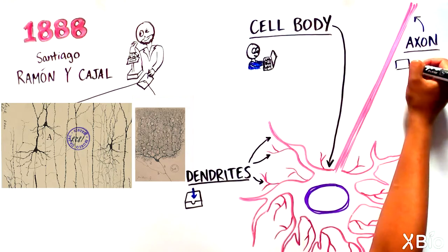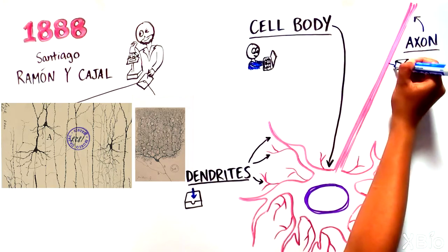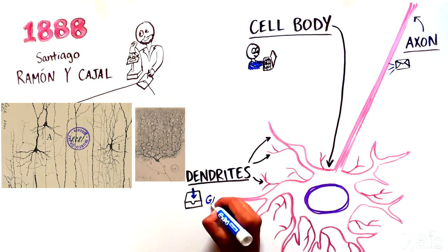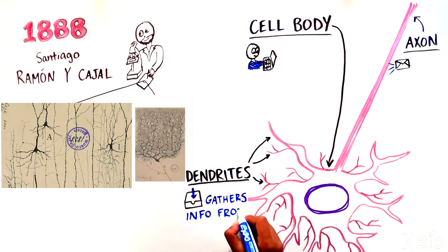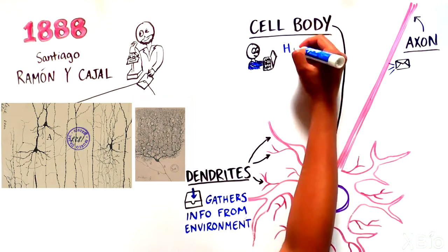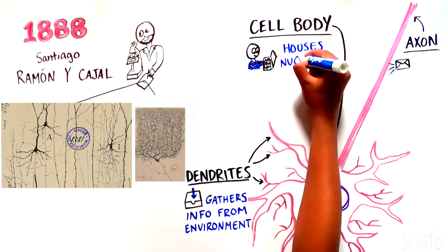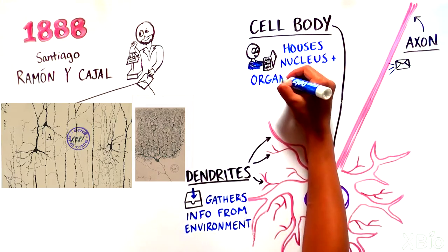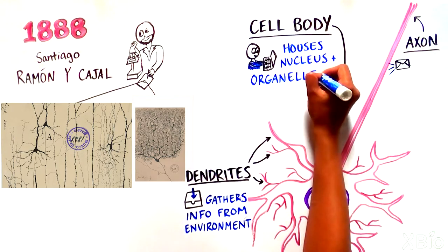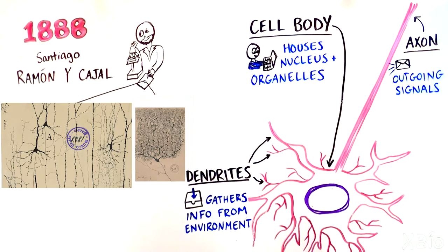The dendrites are branch-like projections extending from the cell body, through which the neuron gathers information from its environment, including other cells. The cell body houses the nucleus and many of the cellular organs, known as organelles, which aid in processing incoming messages from the dendrites and regulating the production of outputs, like proteins or other molecules.